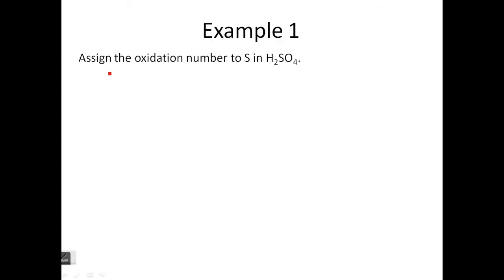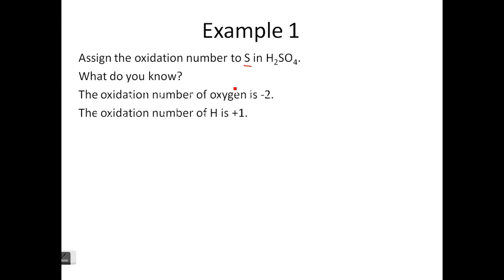Now let's move on to an example. So assign the oxidation number to S in H2SO4. Now what do you know? Go back to the rules. And we know that the oxidation number of oxygen is negative two, and the oxidation number of H is plus one.